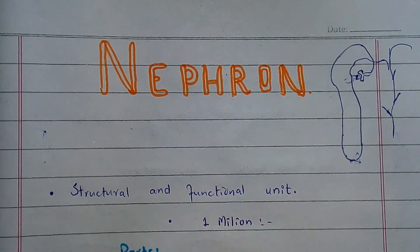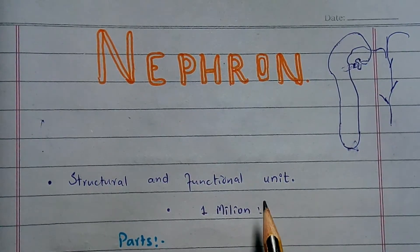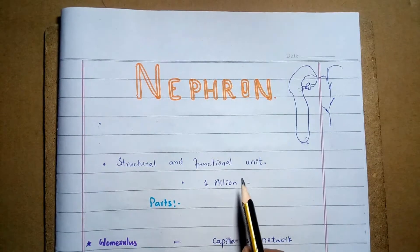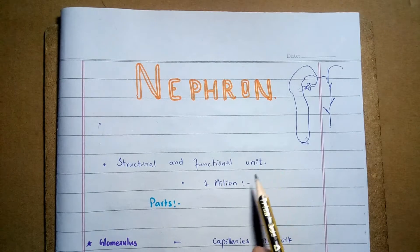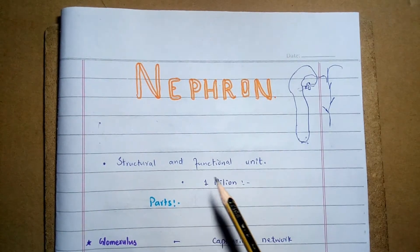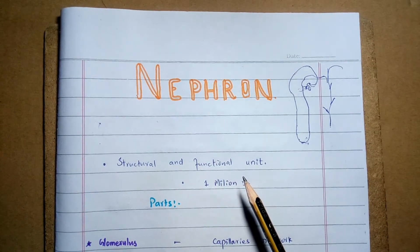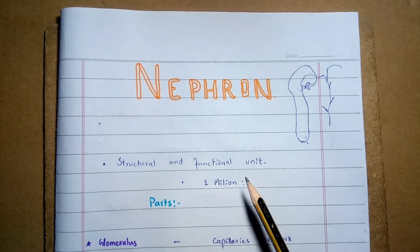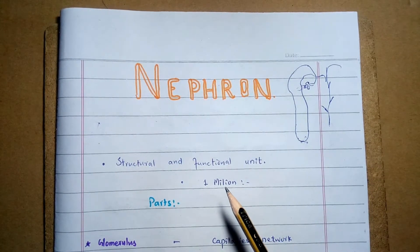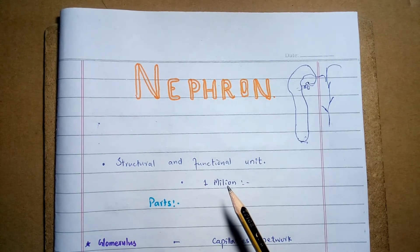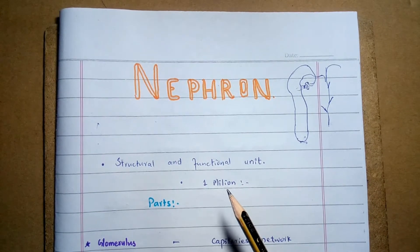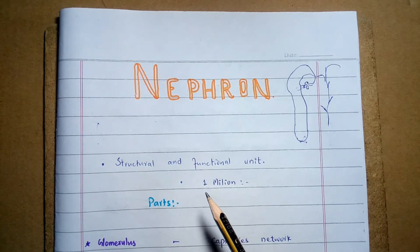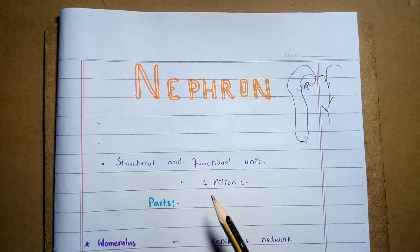The nephron is the structural and functional unit of the kidney which is capable of forming urine by itself. There are almost 1 million nephrons present in each kidney, so both kidneys in an adult human being consist of almost 2.4 million nephrons.